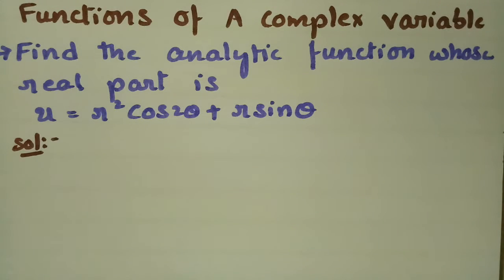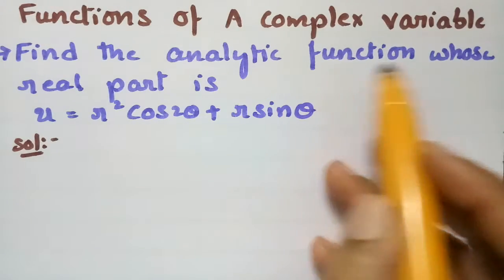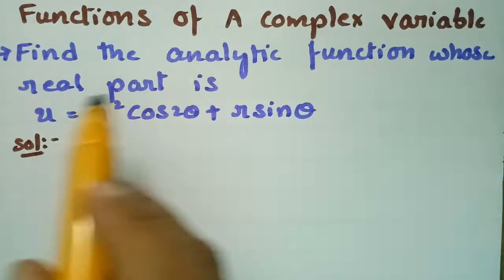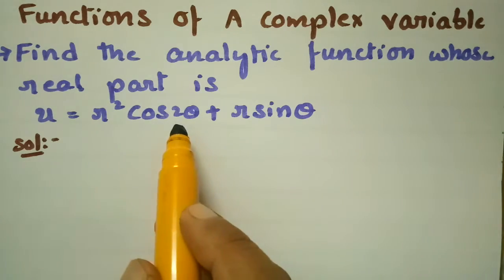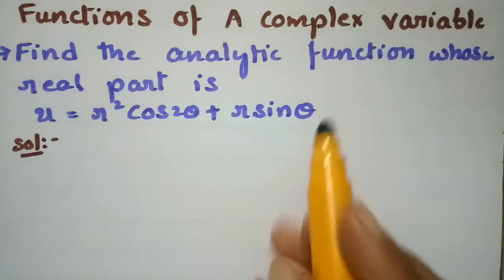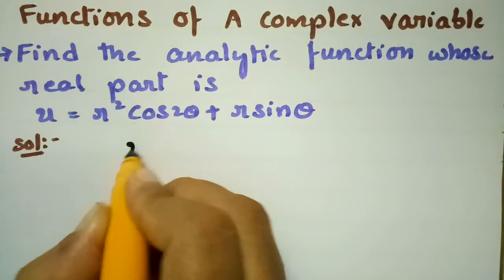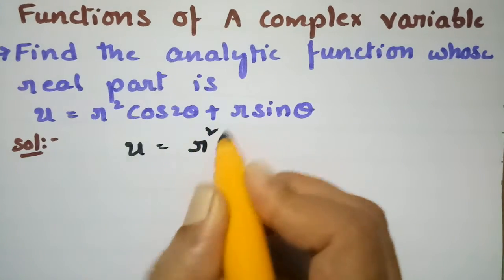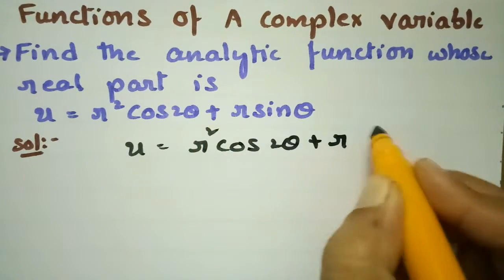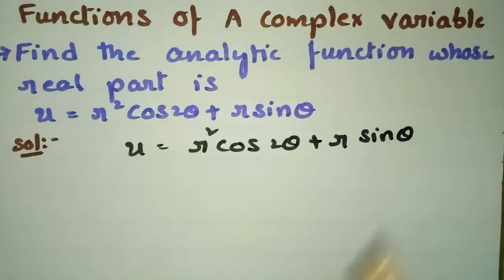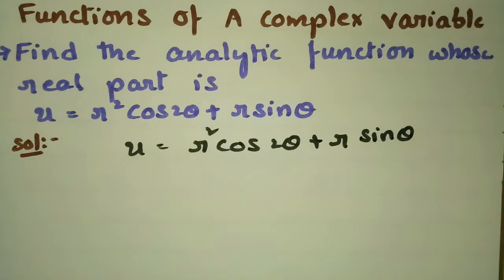In today's video I am going to explain a problem from functions of complex variables. I am going to find out the analytic function whose real part is given as u = r² cos2θ + r sinθ. The real part u is given as r² cos2θ + r sinθ, and now I have to find out the analytic function.